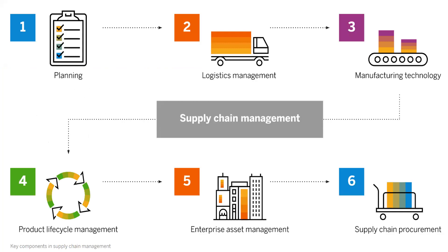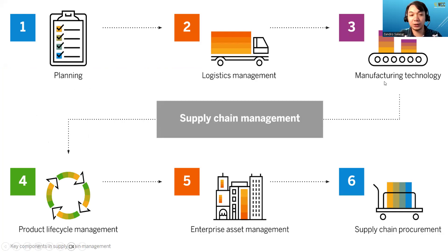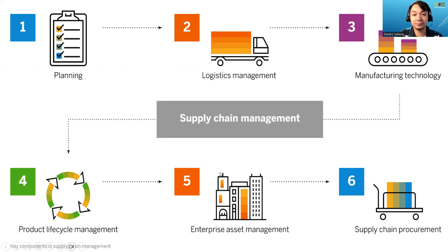Here is an example of the supply chain management map. As mentioned, it starts with planning, then logistics management, then manufacturing technology. It also includes product lifecycle management and logistics management.